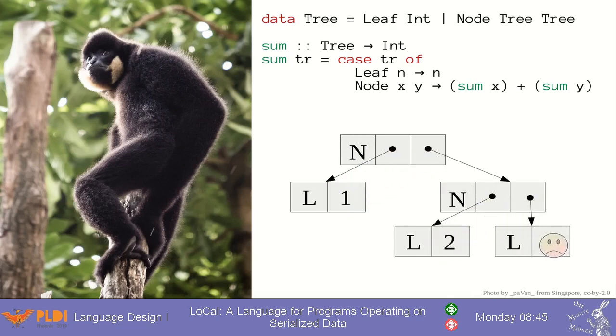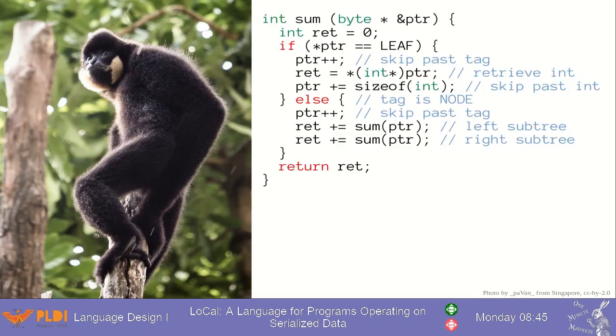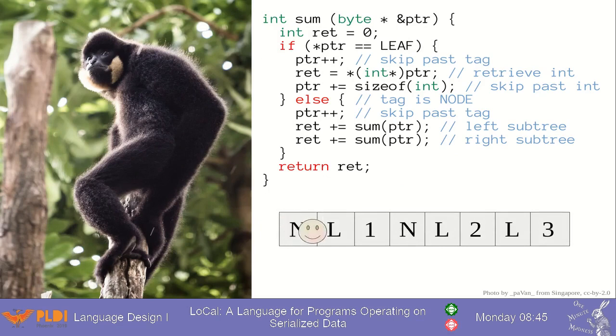As an optimization, we went on to avoid deserialization with some C code, where we compute the sum efficiently by walking through the bytes. No need for building and traversing the pointer-based tree.